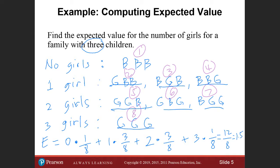The answer is twelve divided by eight, which equals 1.5. So the expected value is 1.5. This means that if we record the number of girls in many different three-child families, the average number of girls across all those families will be 1.5.